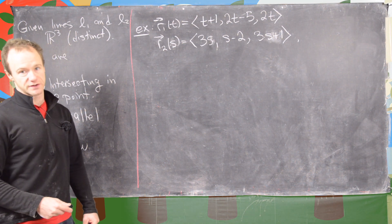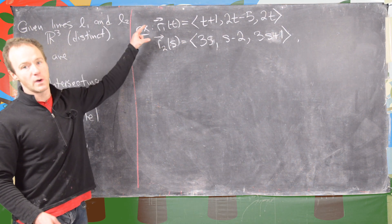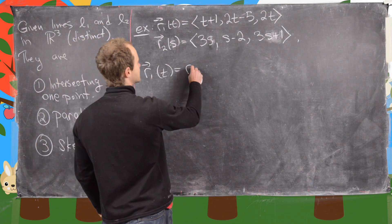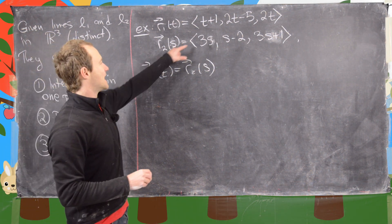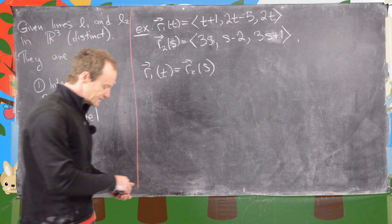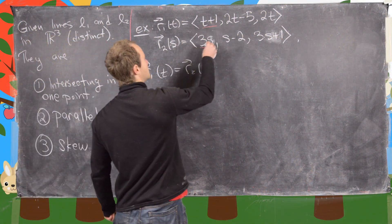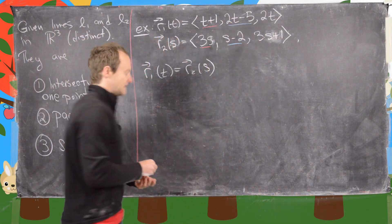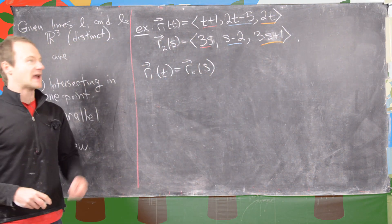An intersection would be like having the same point on each line, which means we want to solve the equation R1 of T equals R2 of S for S and T. Notice that's going to give us three equations and two unknowns. Using the definition of equality of vectors, the components have to be equal. So T plus 1 needs to be 3S, 2T minus 5 needs to be S minus 2, and 2T needs to be 3S plus 1.